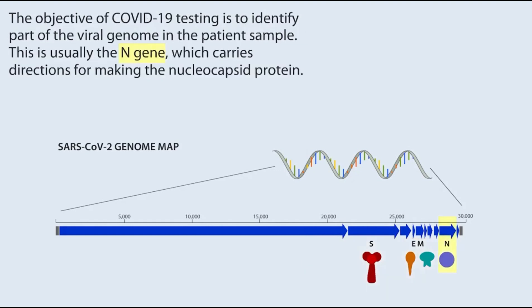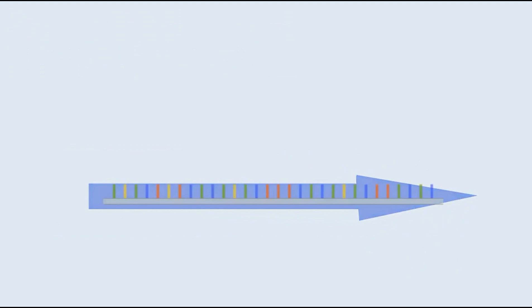The objective of COVID-19 testing is to identify part of the viral genome in the patient sample. This is usually the N-gene, which carries directions for making the nucleocapsid protein. There is not enough viral RNA to detect directly in the patient's sample, so a process called reverse transcription polymerase chain reaction, RT-PCR, amplifies many copies of a segment of the N-gene.